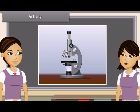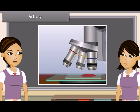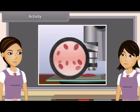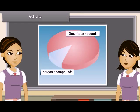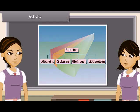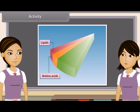Let us do an activity to find out the different types of blood cells. I have taken a drop of blood on a slide and am observing it under a microscope. We can see red blood corpuscles or erythrocytes, white blood cells or leukocytes, and platelets. Plasma forms 55% of the total volume of blood. Plasma is a complex fluid containing inorganic salts and organic compounds like albumins, globulins and fibrinogens, glucose, amino acids, lipids, vitamins, enzymes, hormones and waste materials like urea and uric acid.